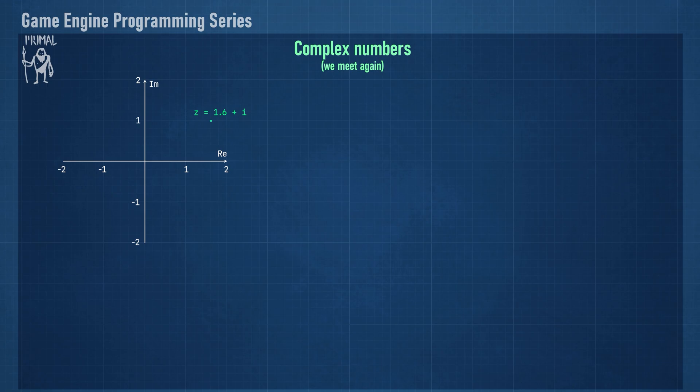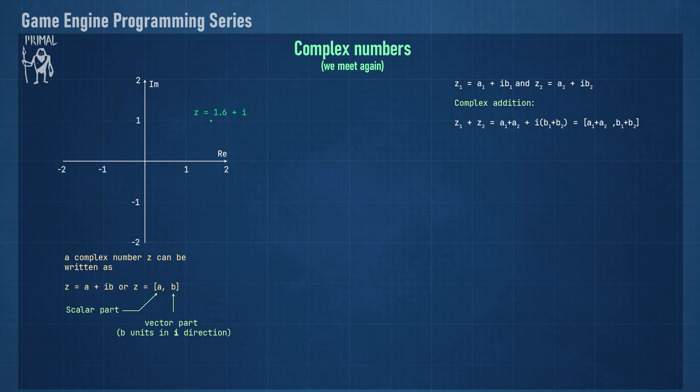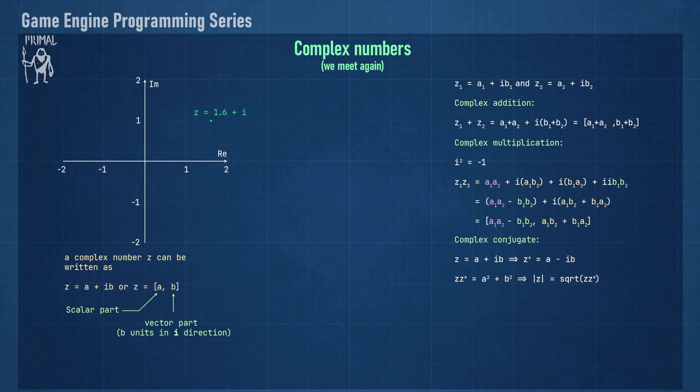In most cases, complex numbers are written as a sum of a real number plus an imaginary number. However, we can also write them as a scalar part and a vector part. The vector part is a one-dimensional vector in the direction of the imaginary axis. We can add two complex numbers in the same way we add vectors. Multiplication is also the same, except i squared evaluates to minus 1. Another property of complex numbers is the complex conjugate, which simply flips the sign of the imaginary part of the complex number. Multiplying a complex number with its conjugate equals the square distance of that number to the origin. We can use that to calculate the magnitude of the vector from the origin to the complex number.